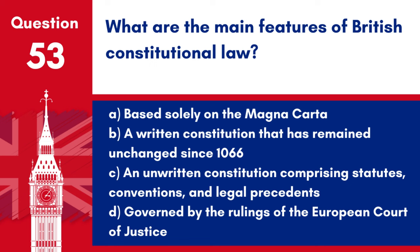Question 53: What are the main features of British constitutional law? a. Based solely on the Magna Carta. b. A written constitution that has remained unchanged since 1066. c. An unwritten constitution comprising statutes, conventions and legal precedents. d. Governed by the rulings of the European Court of Justice. Answer: c. Unlike many countries, the UK does not have a single written constitution. Instead, its constitutional framework is based on various sources, including statutes, judicial decisions and historical documents.